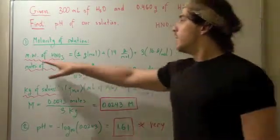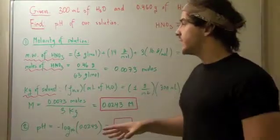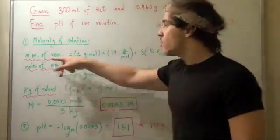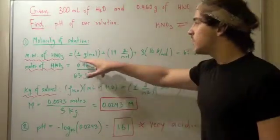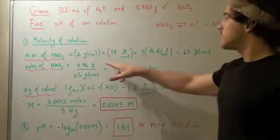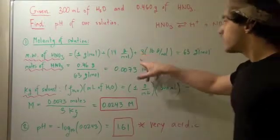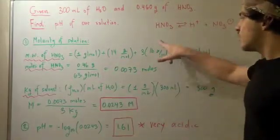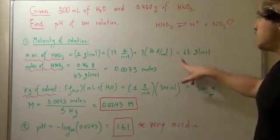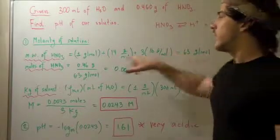So let's begin. Molecular weight of our nitric acid is calculated by adding up the atomic weights of each respective atom. So 1 gram per mole for H plus 14 grams per mole for N plus 3 times, because we have a subscript of 3, 16 grams per mole for O, gives you a molecular weight of 63 grams per mole for nitric acid.